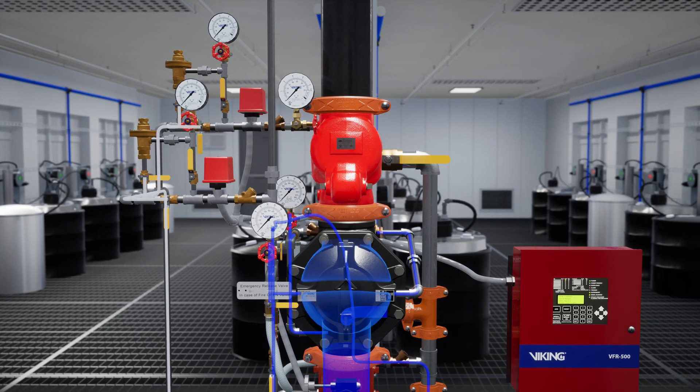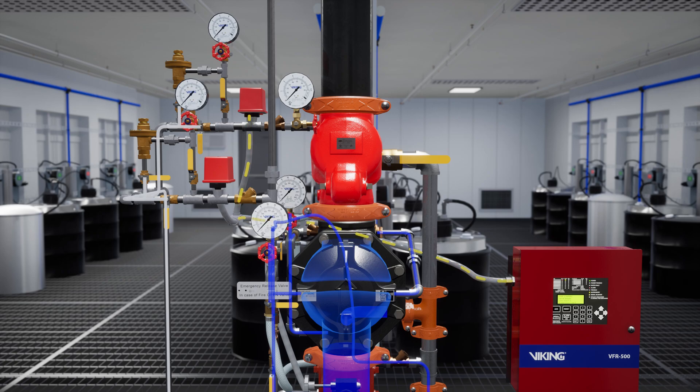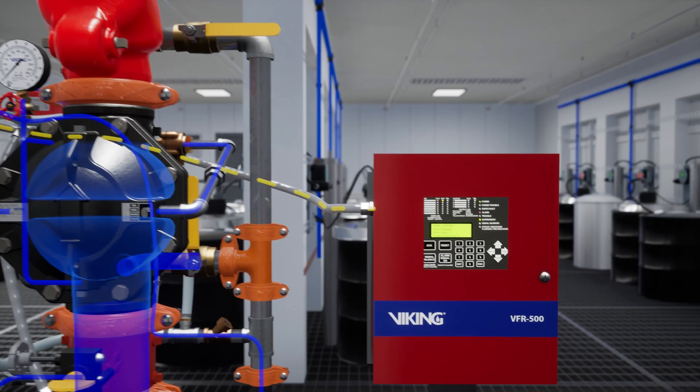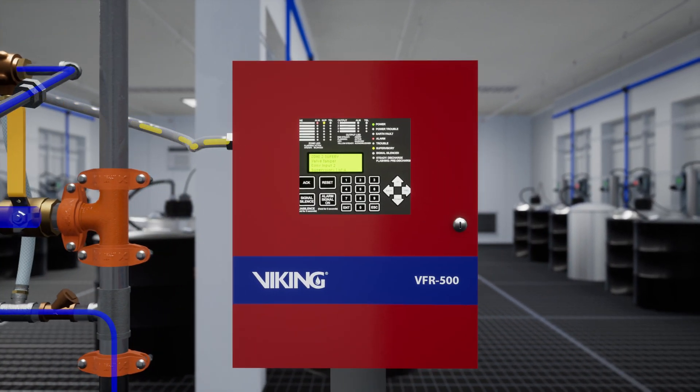After the air pressure is released, the PS40 will send a signal to the VFR 500 and the panel's buzzer will reactivate. This isn't required, but we are going to silence the panel once again. Press the silence button on the VFR 500 release control panel.